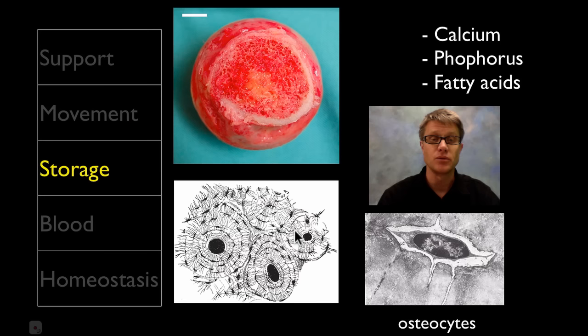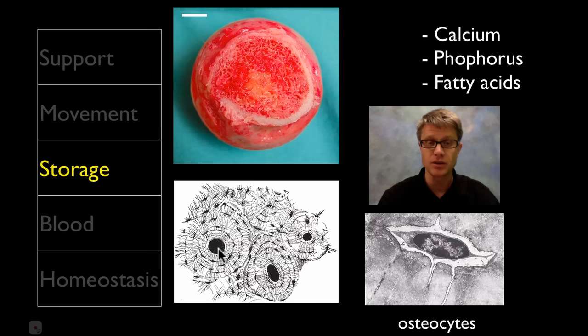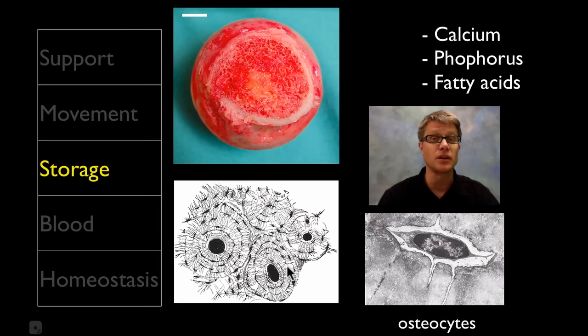Bones do other things as well — they're going to be a site of storage. It's a living organ. Inside you can see how alive it is. You'll have these Haversian canals that go through the middle, allowing blood to flow through. Then you're going to have these osteocytes, which are cells that almost look like a star, and they are laying down new bone. That bone is made up of chemicals — a lot of calcium and phosphorus, among others. It's giving structure but also storing minerals. When we need calcium, phosphorus, or fatty acids, we can grab that from our bone because it's connected right to the circulatory system.